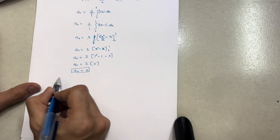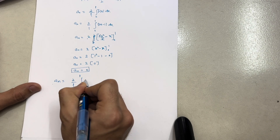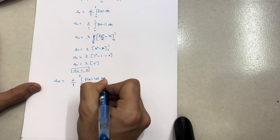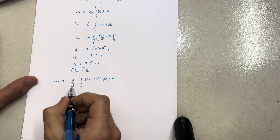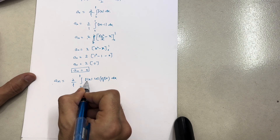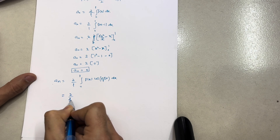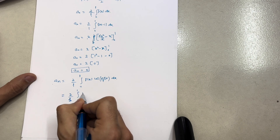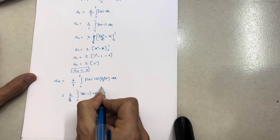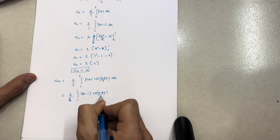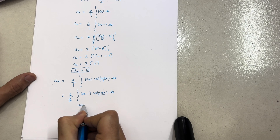Now we calculate aₙ. The formula is aₙ = (2/L) times the integral from 0 to L of f(x) cos(nπx/L) dx. With L = 1, this becomes: aₙ = 2 times the integral from 0 to 1 of (2x − 1) cos(nπx) dx. We will use Bernoulli's rule of integration.